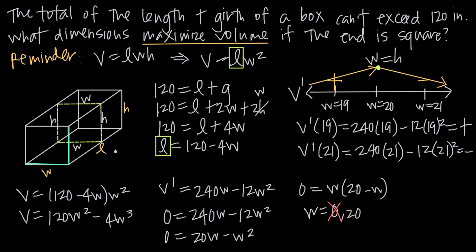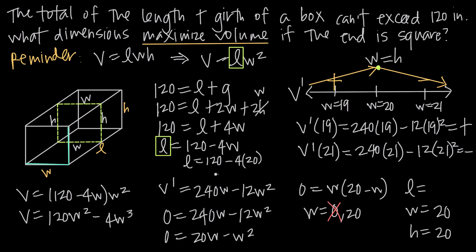Since the end of the box is square, width equals height, so height = 20 as well. For the length, we use L = 120 − 4w. Plugging in w = 20: L = 120 − 4(20) = 120 − 80 = 40. So the final answer is: the dimensions 40 × 20 × 20 are the dimensions that maximize the volume of this box.